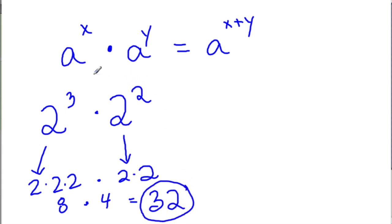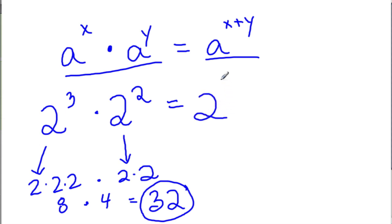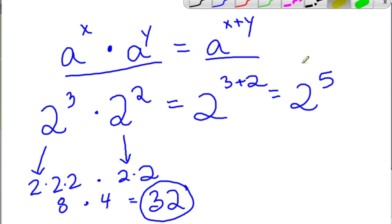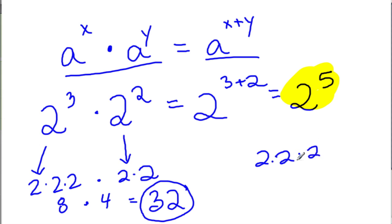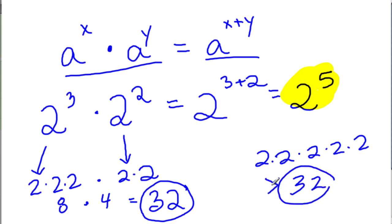But what we're saying here is that if you have two of the same bases — and we do, both are 2 — and two exponents that can be the same or different, we add them. So let's keep the base the same and add the exponents: 3 plus 2. 3 plus 2 is 5, so it's 2 to the fifth. Instead of doing each separately and multiplying, you can think of it in one shot: 2 to the fifth power. 2 to the fifth power is 2 times 2 times 2 times 2 times 2, which is 32 — the same answer.